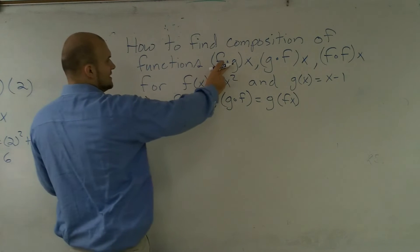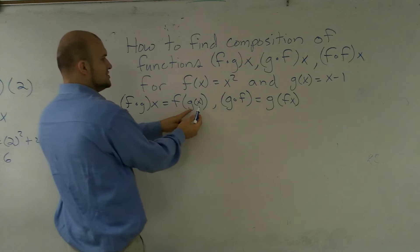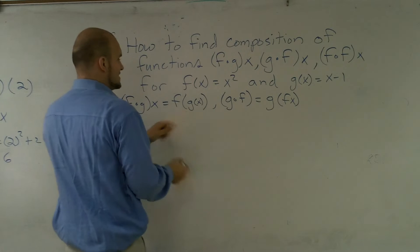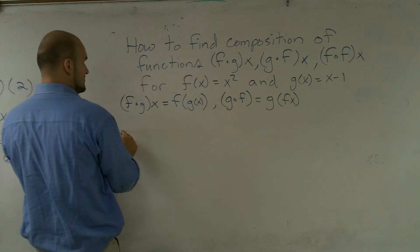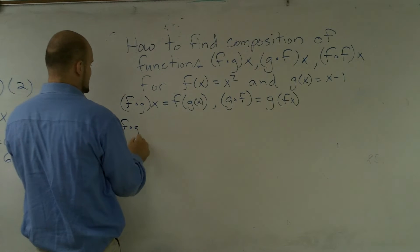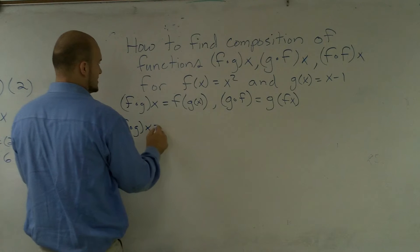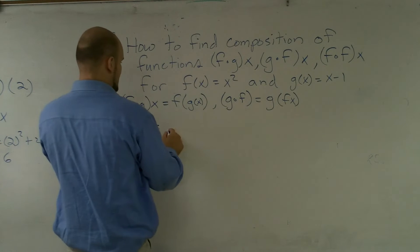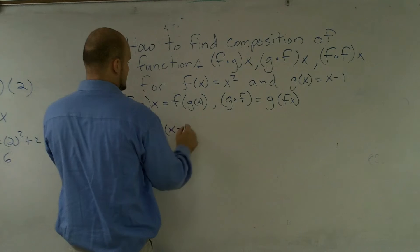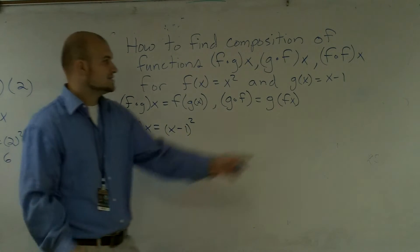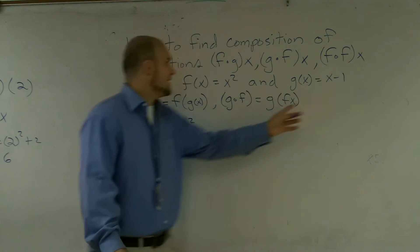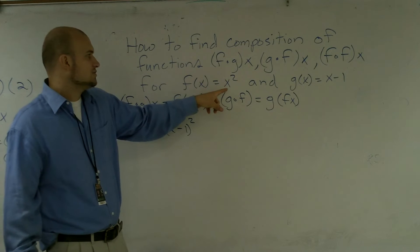So if I want to first complete f of g, I'm going to plug my g of x equation into my x squared. So for my first problem, if I wanted to find out what f of g of x was, that's going to equal x minus 1 squared. I took my g of x equation, and I plugged it into my f of x equation.